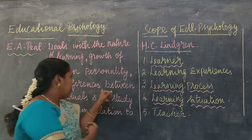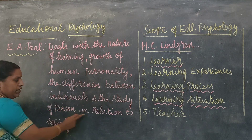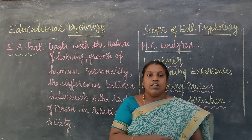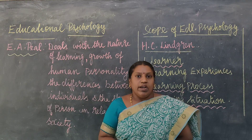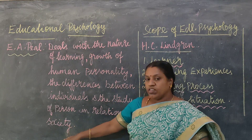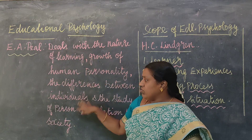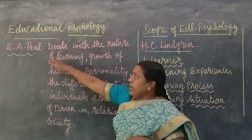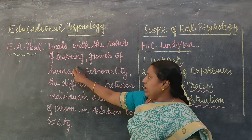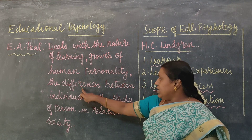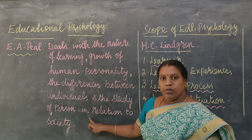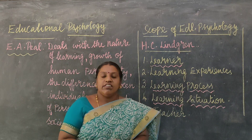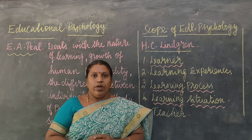We have various types of individual differences. And there is the study of a person in relation to society — how do we relate? Some persons are very friendly and amicable with others, while some are not. So a person's relation to society can also be dealt with. To summarise, educational psychology deals with the nature of learning, growth of human personality, differences between individuals, and the study of a person in relation to society. Educational psychology helps a teacher to understand the learners in their class in a better way.